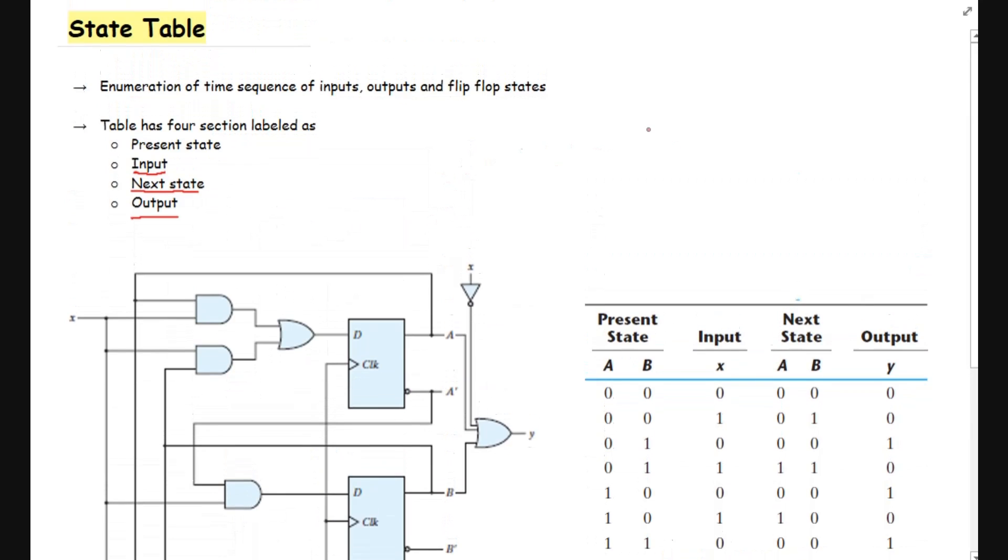We have already developed the equation for this example which was A(t+1) is the function of A(t) times x(t) plus B(t) times x(t).